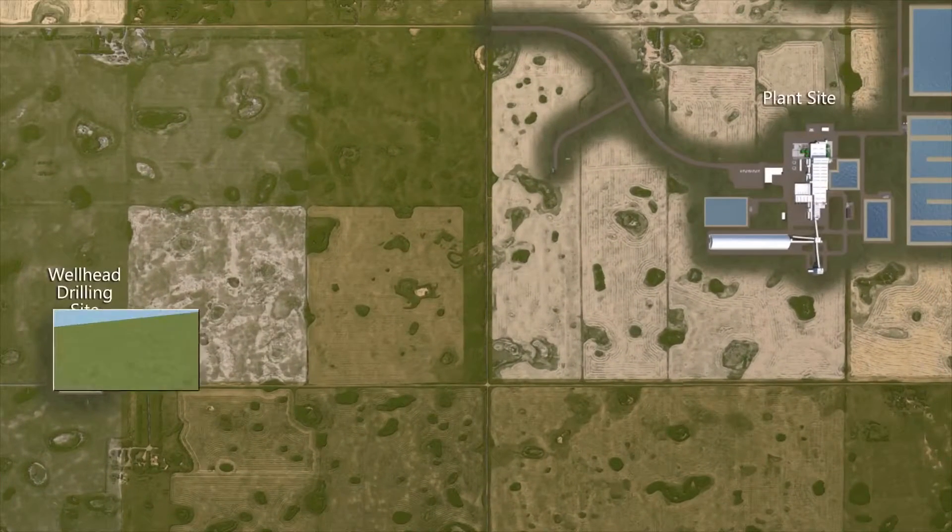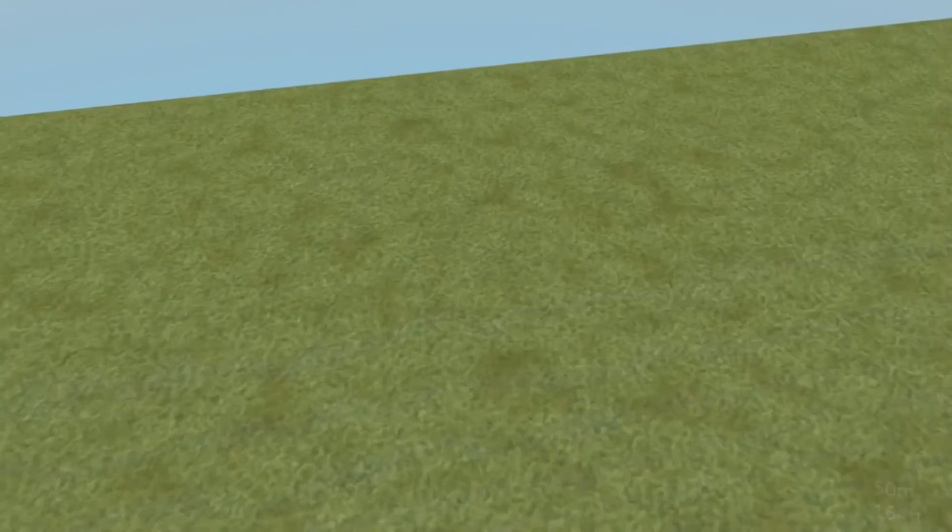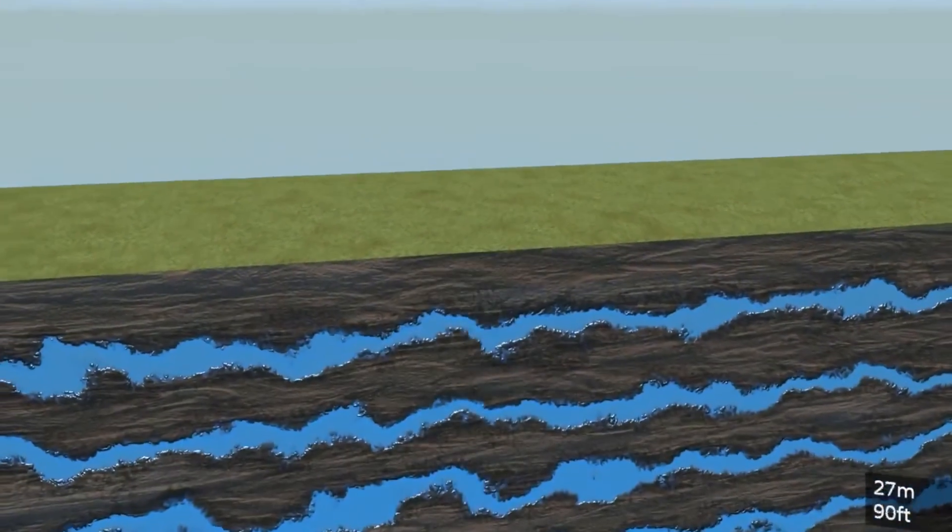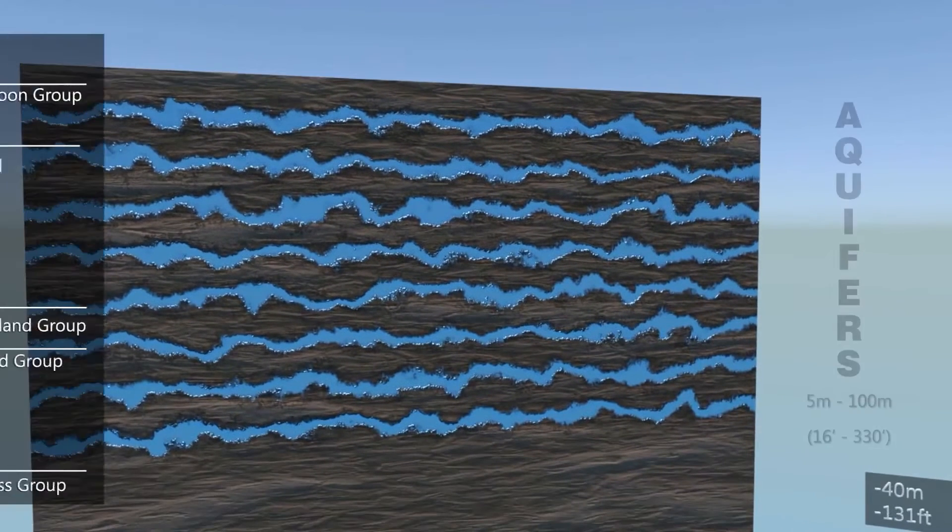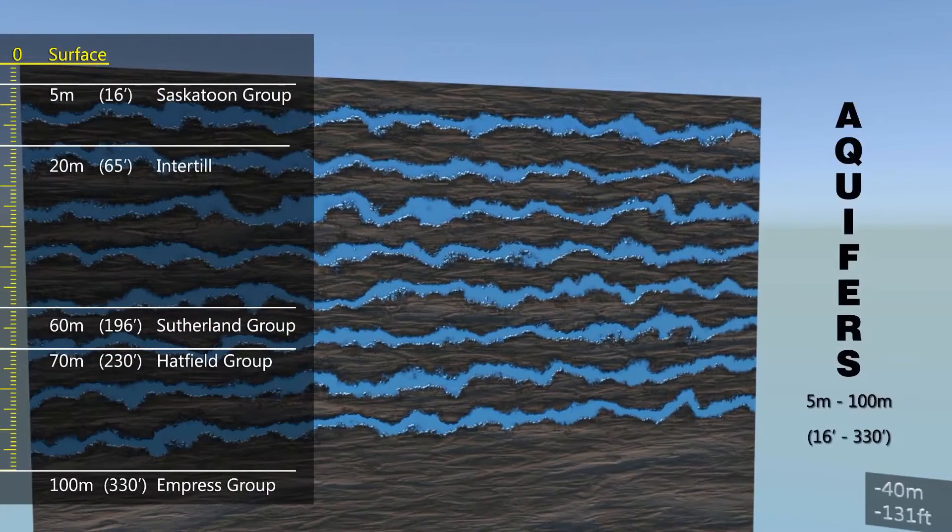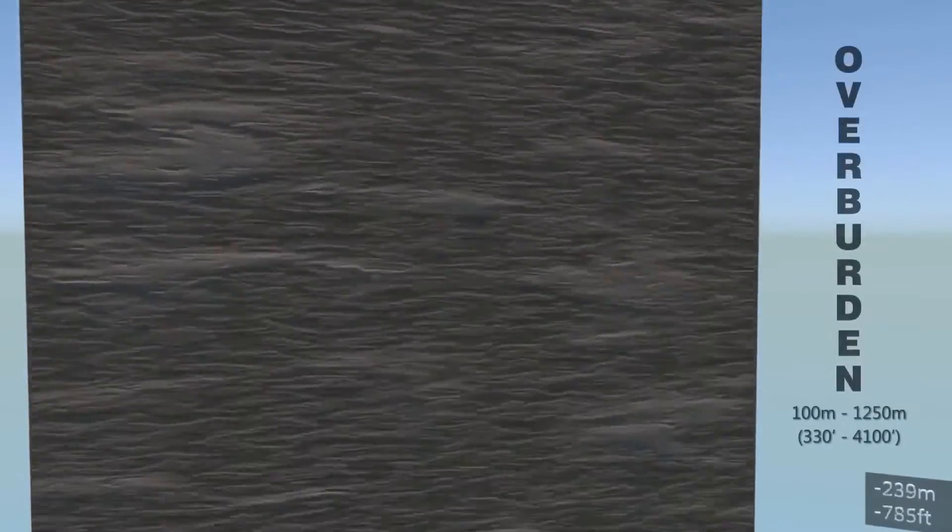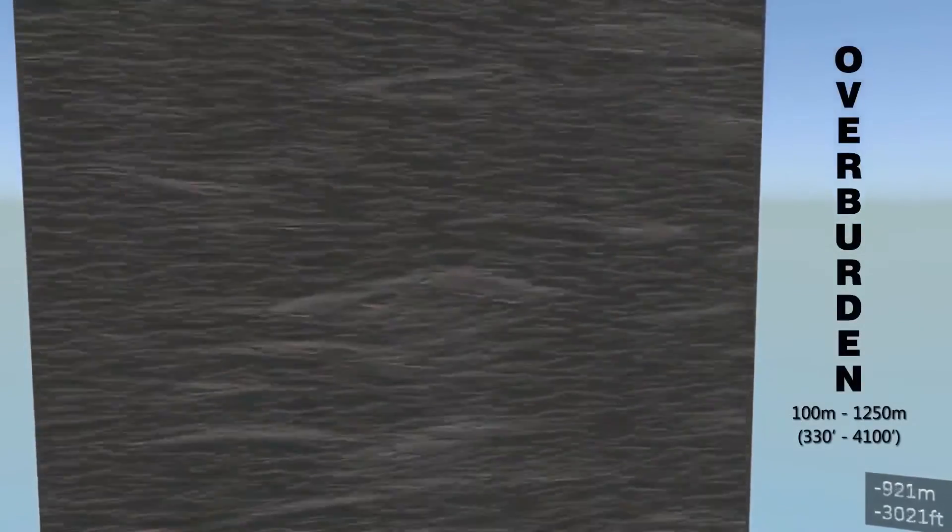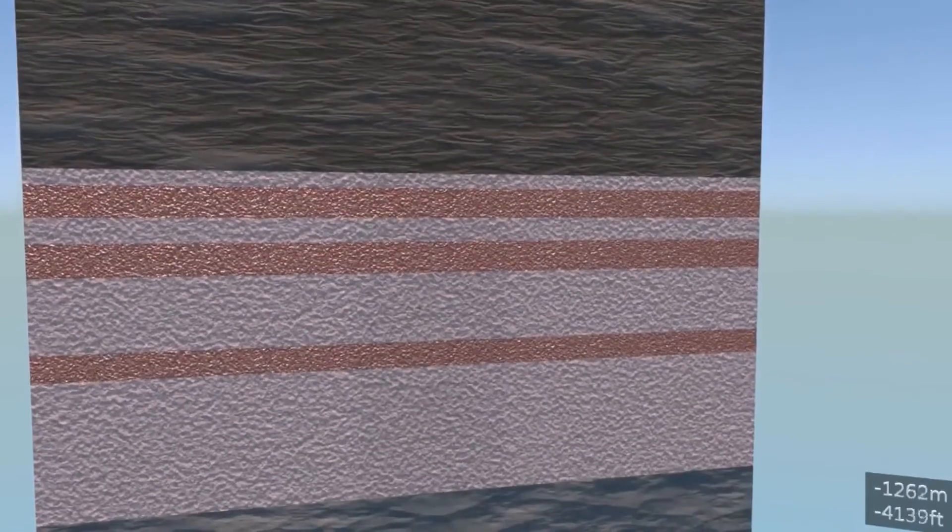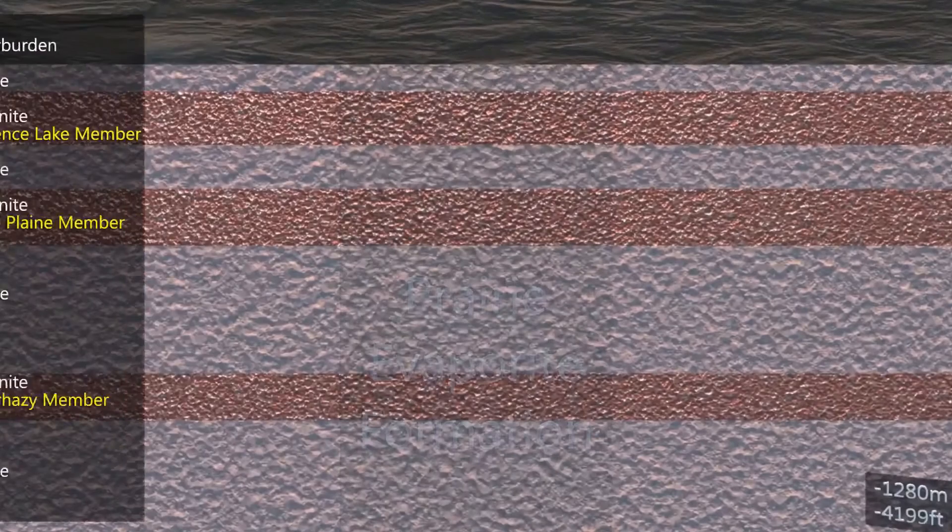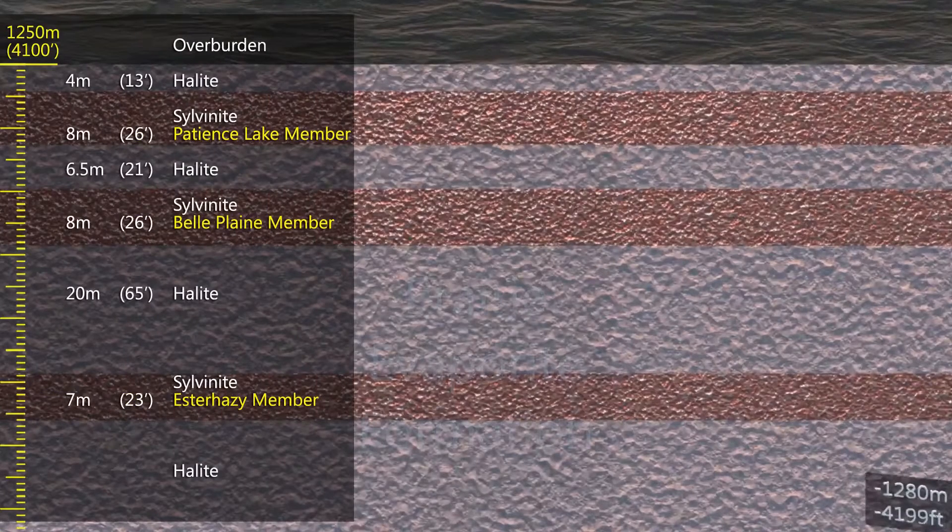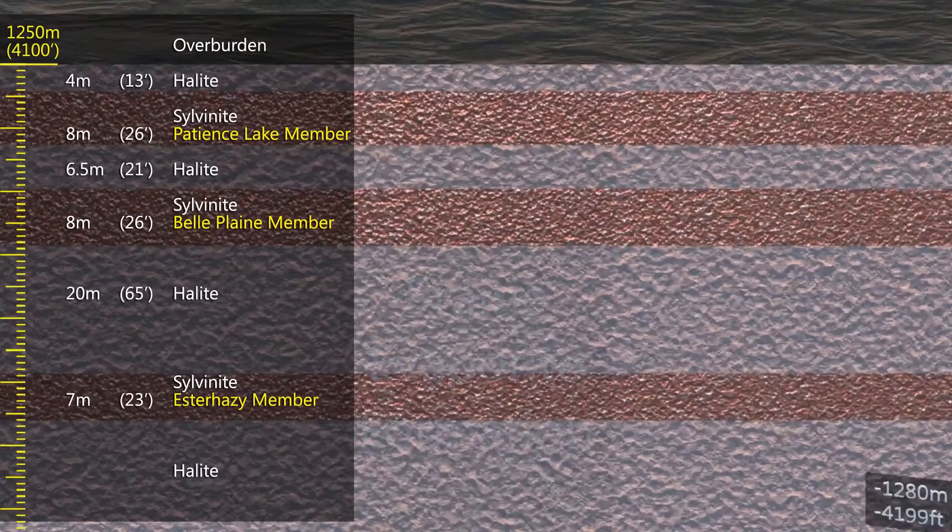The Southie Potash Mine will use a proven solution mining technique to extract the potash from the ground. The mine will extract material from the Prairie Evaporate, which is 1,250 meters below the ground surface, well below the water resource aquifers of the Saskatoon, Sutherland, and Empress groups. Potash will be extracted from the Patience Lake, Belle Plaine, and Esterhazy members.